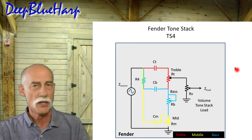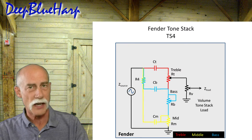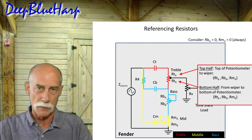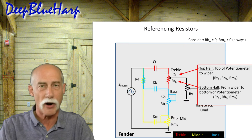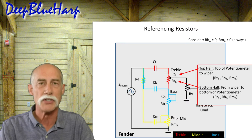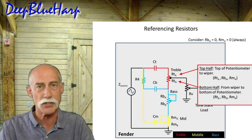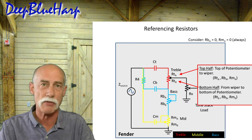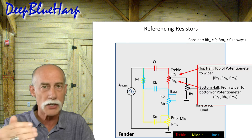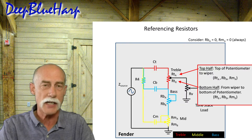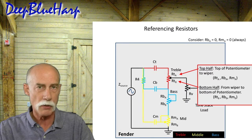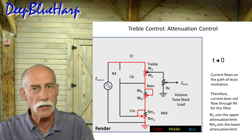Now let's move into the Fender tone stack itself. For nomenclature: R means resistor; RT means a resistor related to the treble; RB is a resistor for the bass; RN is a resistor for the mid. RTA means the resistance value of the treble resistor from the wiper to the top of the pot, and RTB means from the wiper to the bottom of the potentiometer. That's the nomenclature I use throughout my video series.